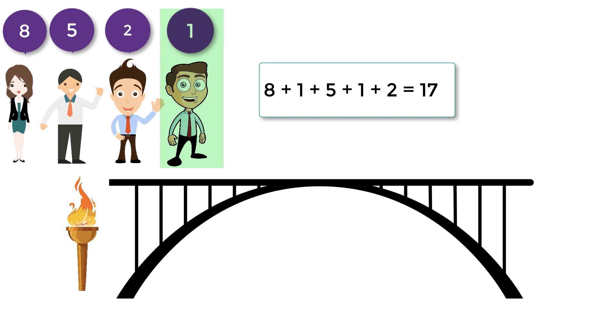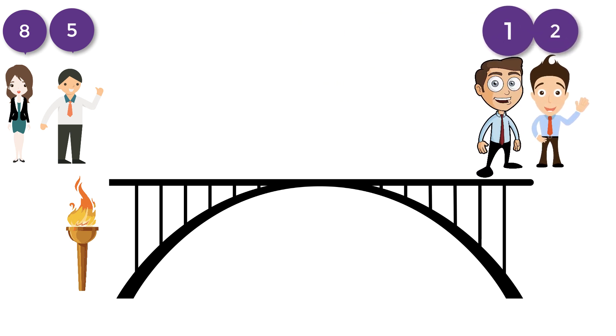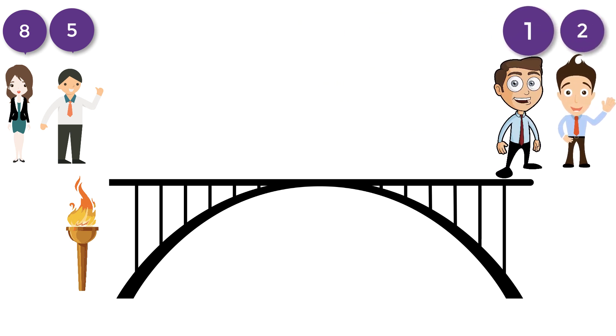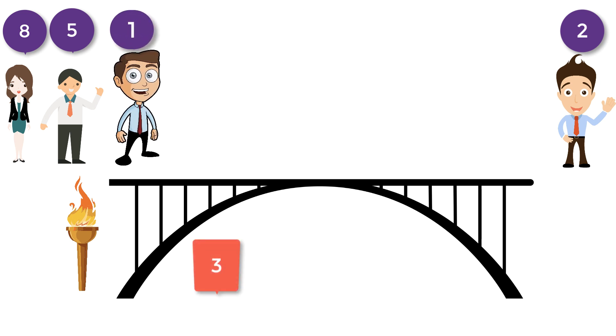Let's brainstorm a little further to reduce the amount of time. At first step, 1 and 2 cross the bridge. Here the number represents the time taken by the corresponding person to cross the bridge. 1 comes back and total time taken in this case is three minutes. Now 2 is on the other side.